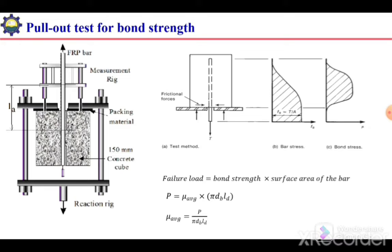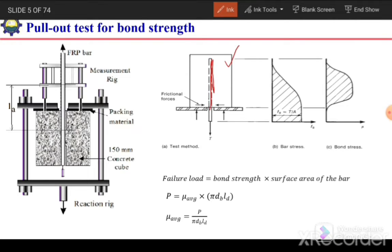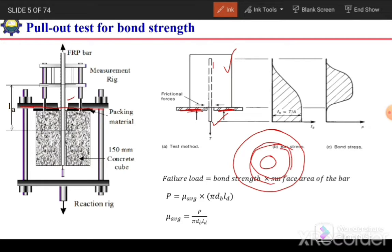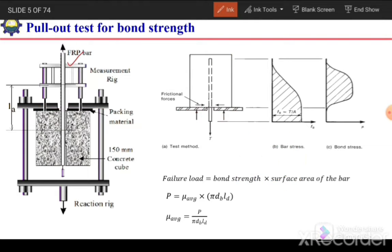Next is the pullout test for bond strength. There are different tests available in the literature to determine the bond strength of a deformed bar embedded in concrete. In the pullout test, we take a concrete cube or cylinder, embed the reinforcement inside it up to a required length, then place the specimen in a machine so it rests against a plate with a hole at its center so that the bar can pass through. The cylinder rests on this plate, which acts as a reaction frame, and then we pull the bar by applying a force with the machine.